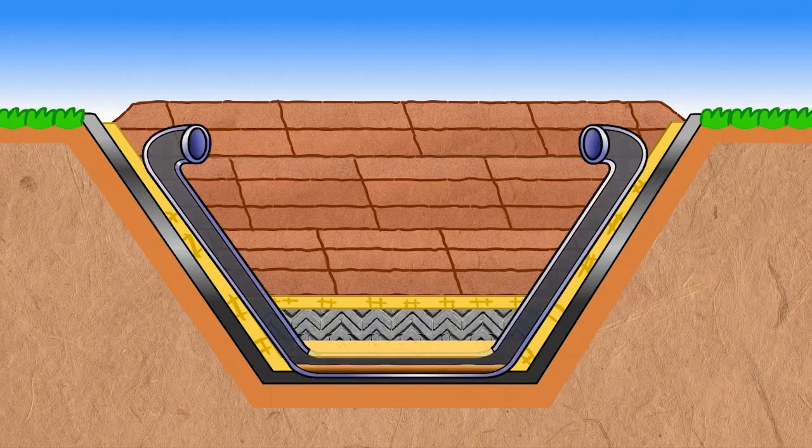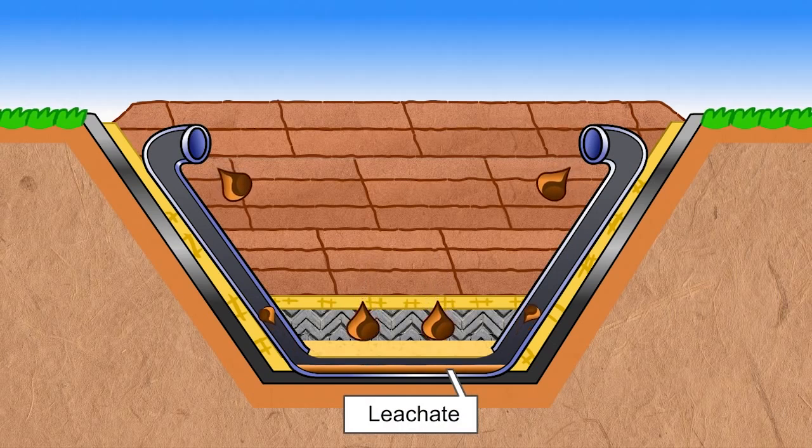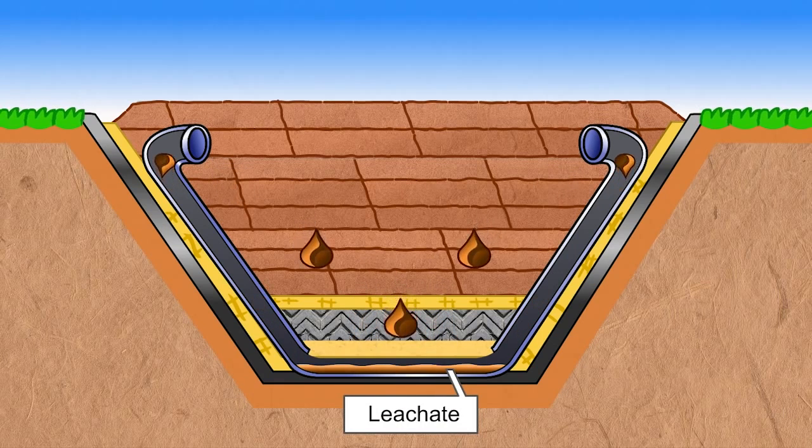In our bioreactor, the fluid collected is called leachate. The leachate is intended to be recirculated along with other fluids into the waste, which enhances the rate of decomposition.